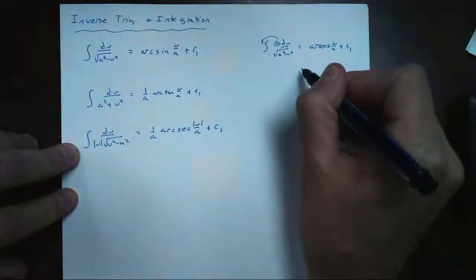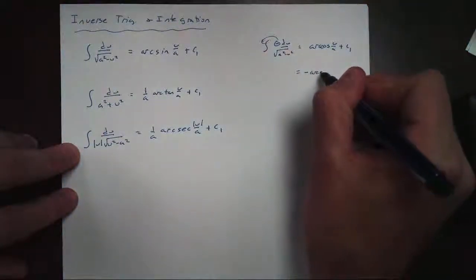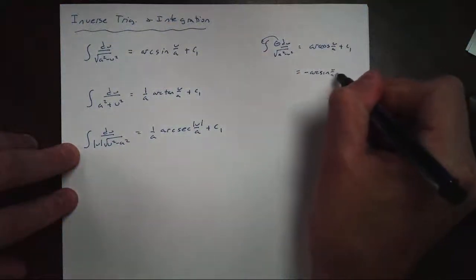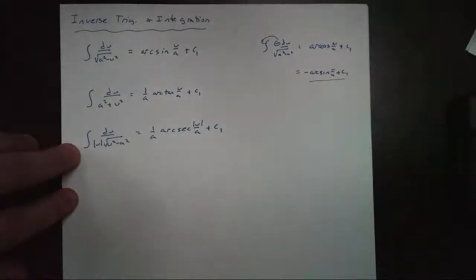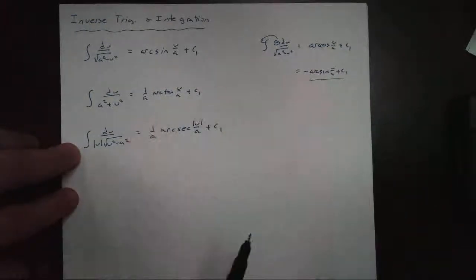Now, we don't have to worry about arc cosine because I can use arc sine by just taking out the negative, and I would get negative arc sine of u over a plus c. So we'll never see the co-functions in a lot of these, unless you want to deal with them.